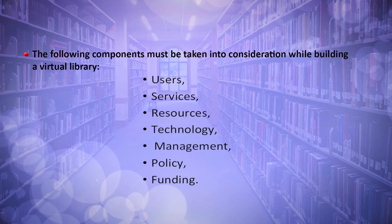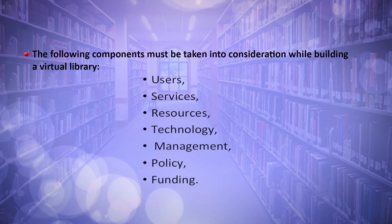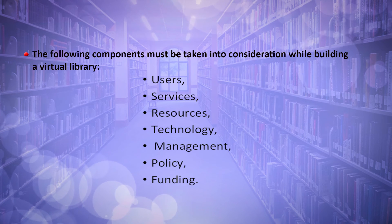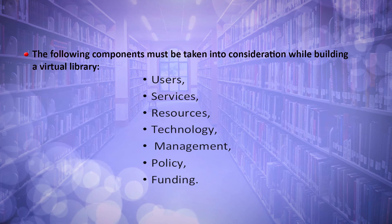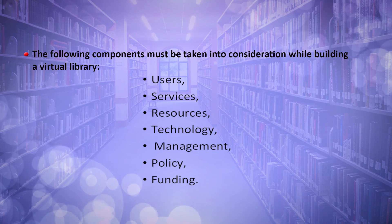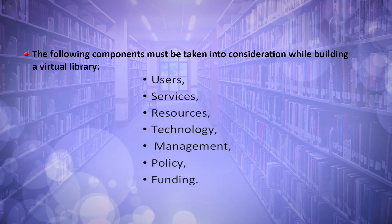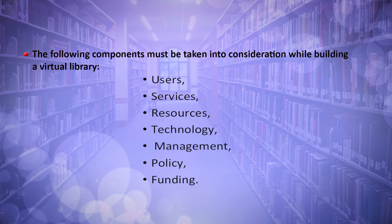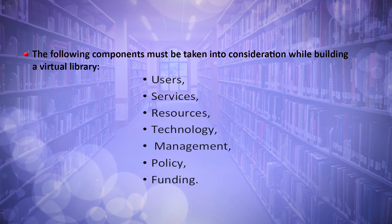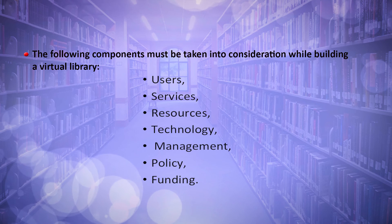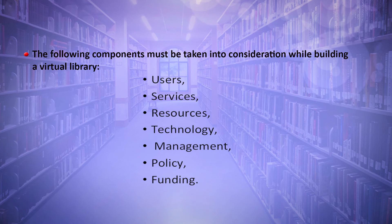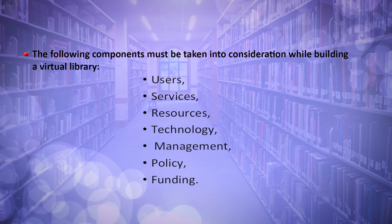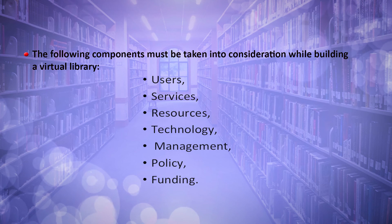Technology is of course central — all these types of libraries other than traditional libraries are heavily technology-oriented. The technology to be used, its security measures, all those aspects need to be kept in mind. Then the management, the policy, and the funding. When we talk about financial resources, we are talking at two levels: one is for setting up the virtual library, and then for sustaining it over a period of time. Like any physical library, we set it up keeping in mind a long period of time, envisaging that the content should be available for posterity.